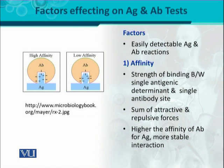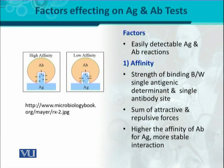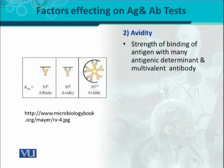There are certain forces involved — attractive forces اور repulsive forces. The sum of these attractive and repulsive forces maintains the antigen-antibody interaction. If the antibody has higher affinity for the antigen, more stable interaction would be there. جیسے آپ اس figure میں دیکھ سکتے ہیں، high affinity میں antigen کا antibody کے ساتھ interaction more stable ہے as compared to low affinity. So affinity is one factor which determines the nature of antigen-antibody interaction.